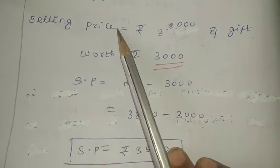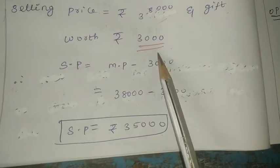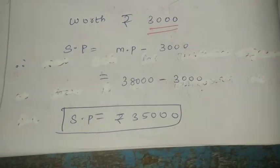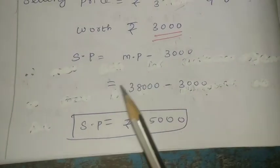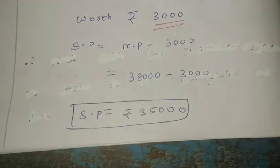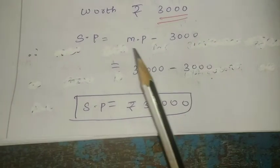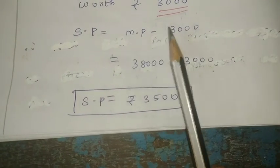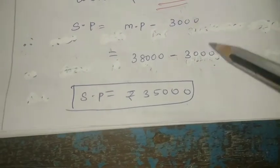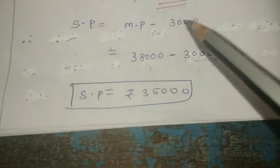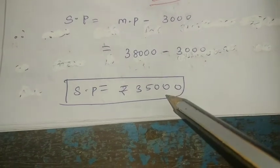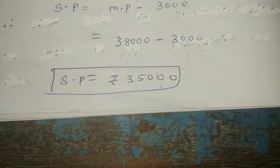First, we will calculate Option 1. The selling price plus a gift worth Rs. 3,000. The selling price is equal to marked price minus discount. Marked price is Rs. 38,000 minus discount of Rs. 3,000. So Rs. 38,000 minus Rs. 3,000 gives a selling price of Rs. 35,000.